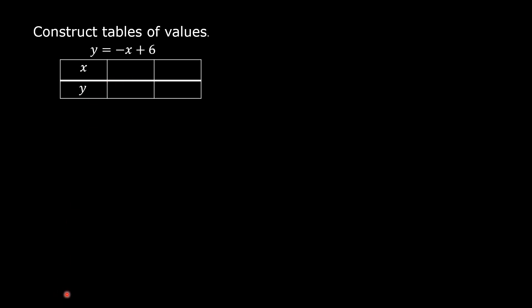Let us say x is 0. If x is 0, then y is equal to 6. Let us assign 2 for x. If x is 2, this will be negative 2 plus 6, so y is equal to 4.